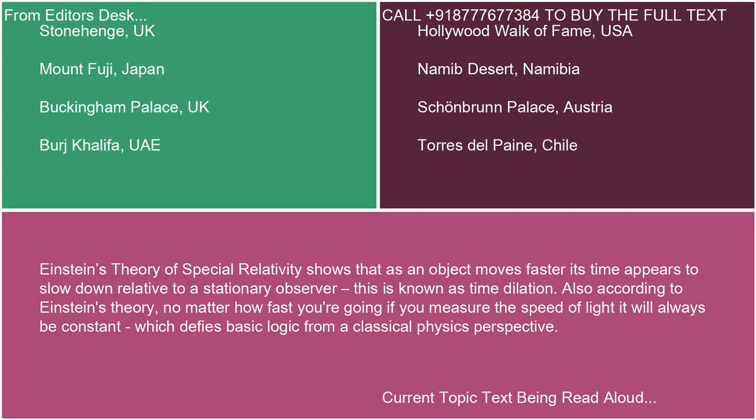Einstein's theory of special relativity shows that as an object moves faster, its time appears to slow down relative to a stationary observer. This is known as time dilation. Also, according to Einstein's theory, no matter how fast you're going, if you measure the speed of light, it will always be constant, which defies basic logic from a classical physics perspective.